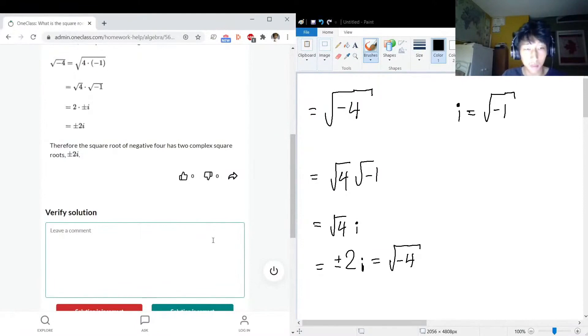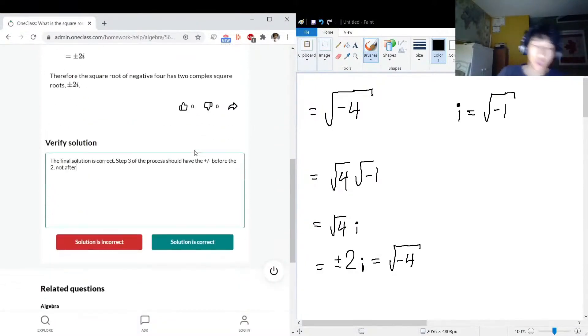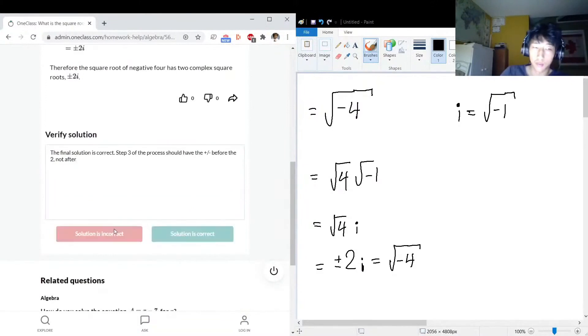Now, the final solution is correct. Correct, correct. Step three needs, should have the plus minus before the two, not after. But the final solution is good.